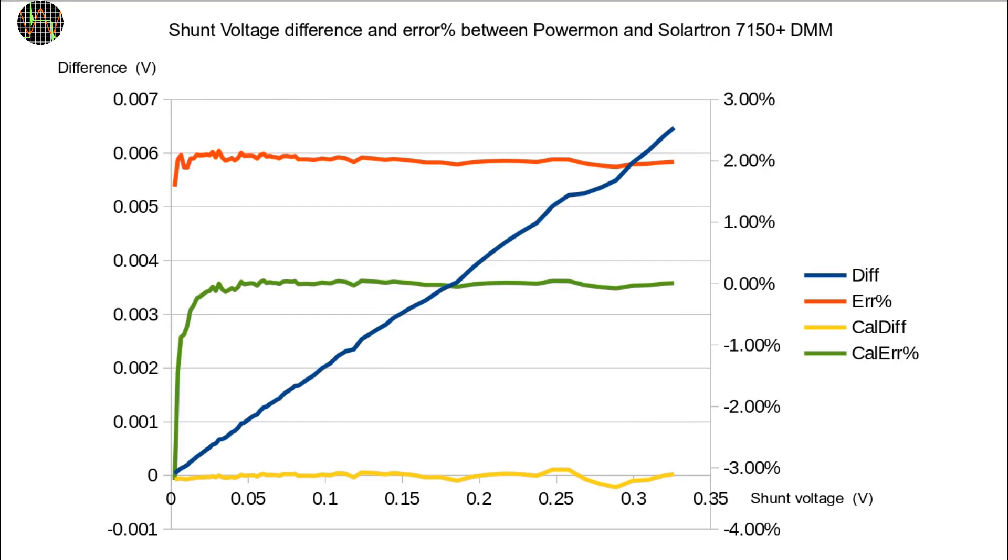This got me thinking. If we now had a calibrated shunt resistor as well, Powermon could calculate accurate current values by simply dividing the shunt voltage by the shunt resistor value. This has a number of implications.